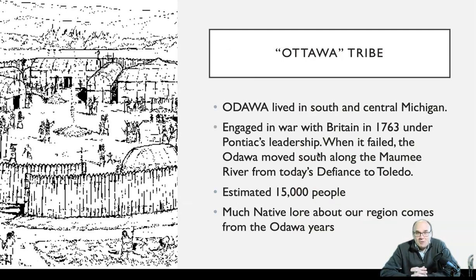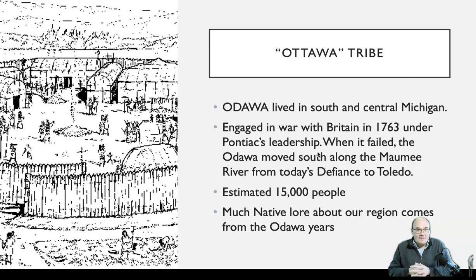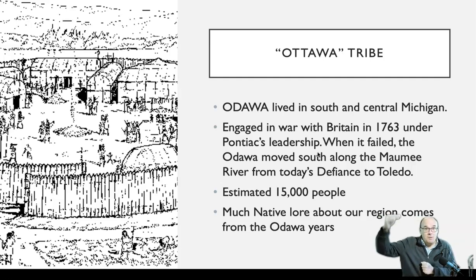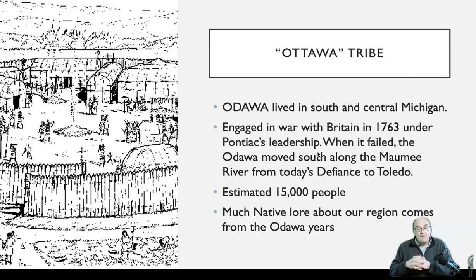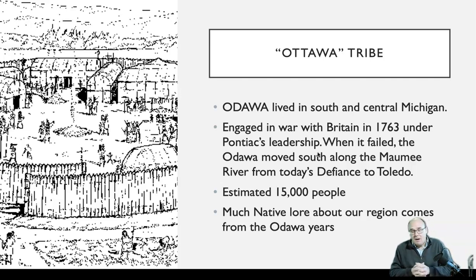This is when the Ottawa tribe enters the scene. At Detroit, there was a siege led by an Ottawa leader named Pontiac. Pontiac's Rebellion was a full-fledged multinational force fighting against the British. When that rebellion was put down, the Ottawa were displaced from north to south, moving from Michigan down into Ohio. They settled along the Maumee River from Defiance to Toledo — places like Defiance, Napoleon, Grand Rapids, Waterville, Maumee, Perrysburg, and Toledo were all Ottawa lands. By about 1763 to 1765, approximately 15,000 Ottawa people are believed to have lived in all of Northwest Ohio.